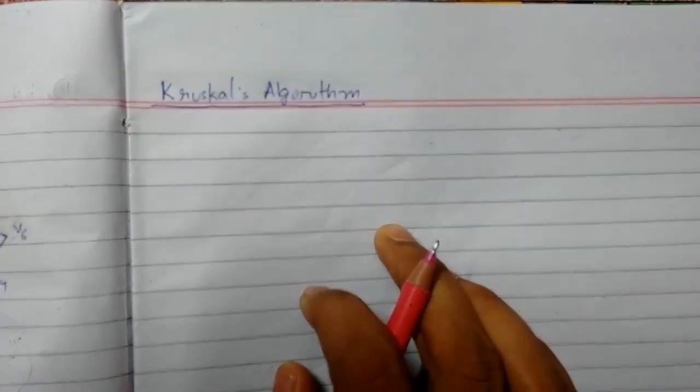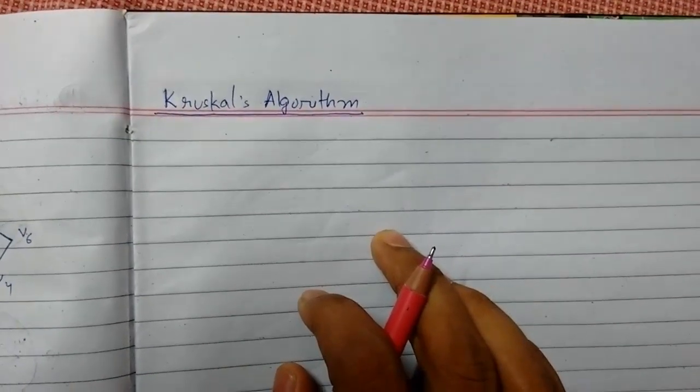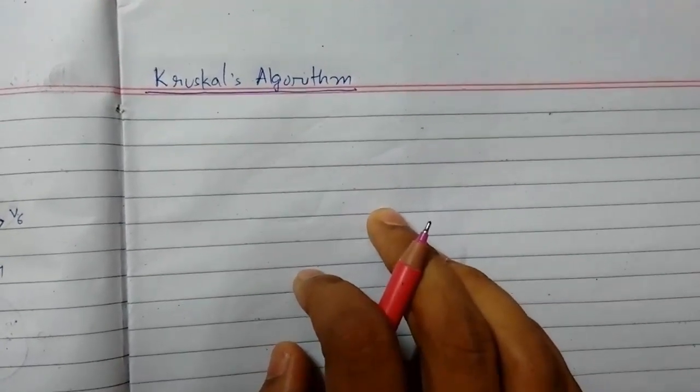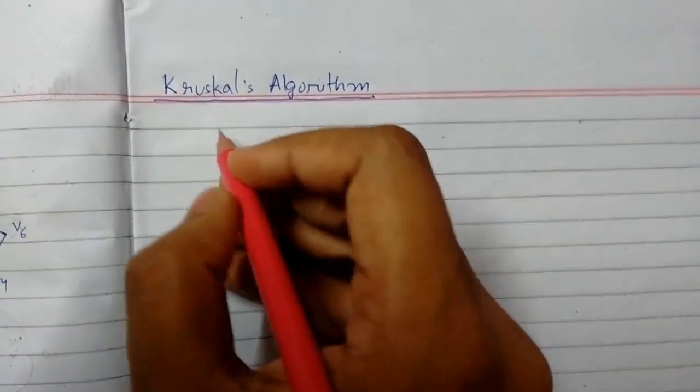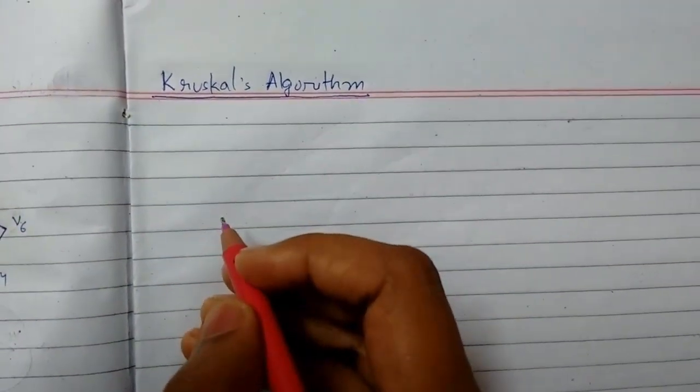Welcome back guys, today we will be continuing graph theory. So today we will be learning about Kruskal's algorithm of finding minimal or shortest spanning tree. To do this, let me show you an example.